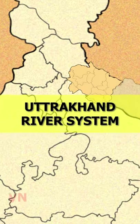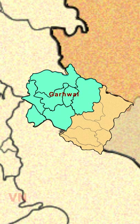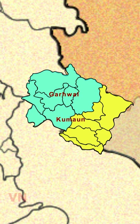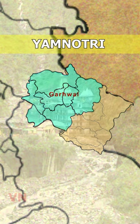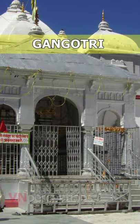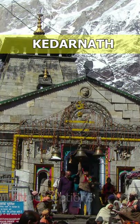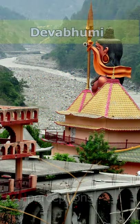Uttarakhand is made up of two administrative divisions: the Garhwal division and the Kumaon division. Uttarakhand is well known for the Chhota Char Dham, located in the Garhwal region. It consists of four sites: Yamunotri, Gangotri, Kedarnath, and Badrinath. That is why Uttarakhand is referred to as Dev Bhoomi.